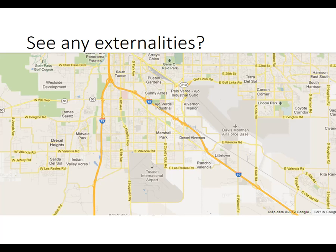There are also a couple of positive externalities on the map. Star Pass golf course is very beautiful, and Reed Park is a very historic part of Tucson. These two areas tend to have positive externalities — the property values around them seem to be a little higher, reflecting that additional benefit. You can think specifically about your own neighborhood or the place where you live or do business.